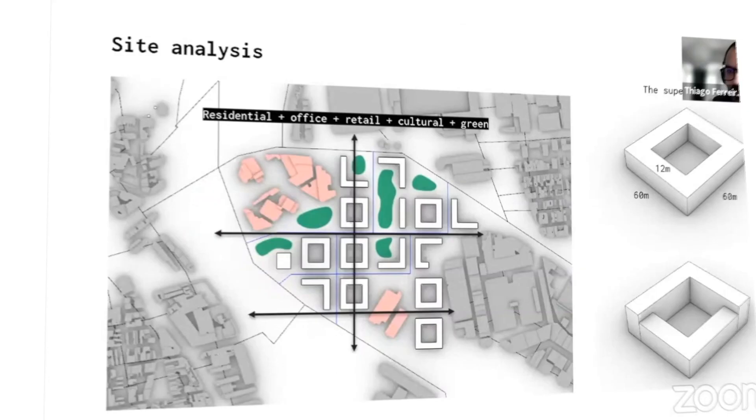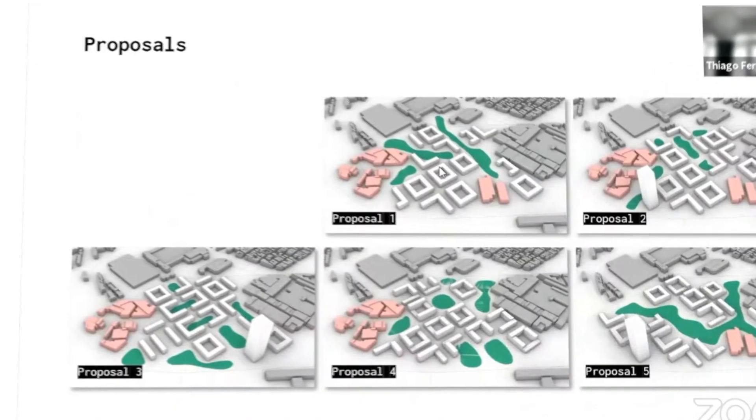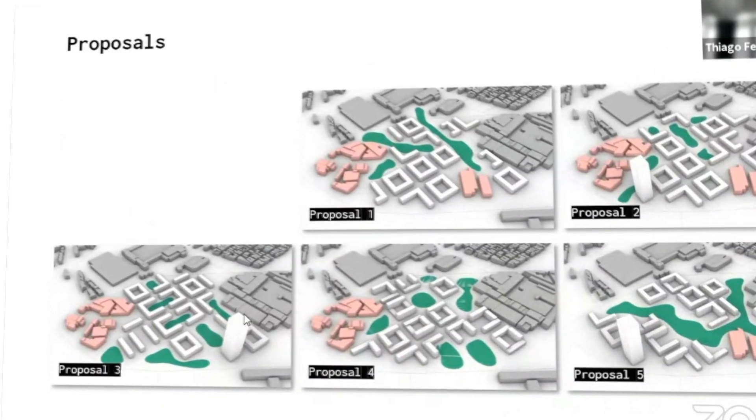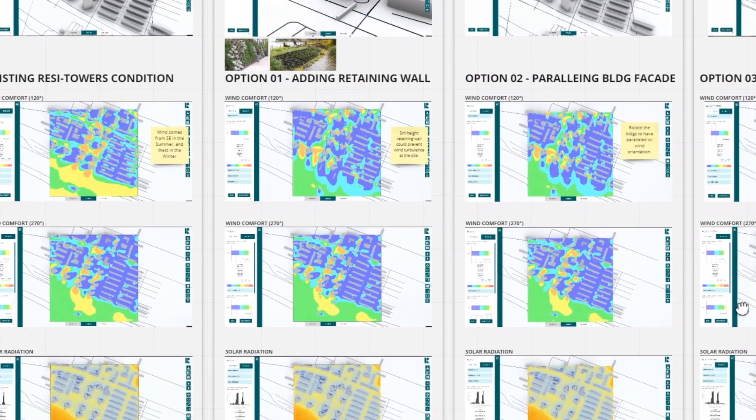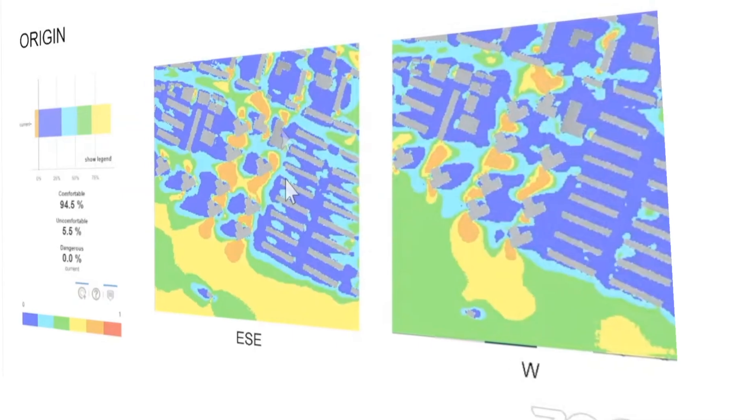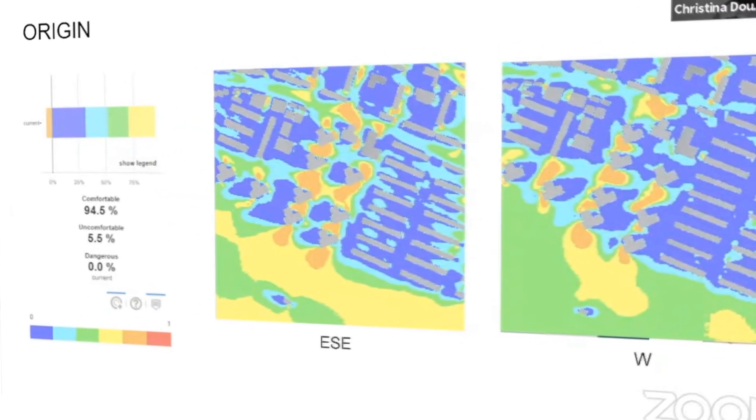Group 1 was quite impressive in the diversity of tools they used, combining Infrared with other workflows like incidental solar radiation analysis, really showcasing Infrared's interoperability. Group 2 had quite a different approach — they experimented with both the web platform and Grasshopper, and one avenue of exploration was looking into retaining walls and seeing the effect of their implementation on wind.